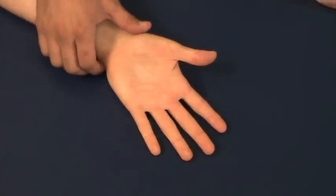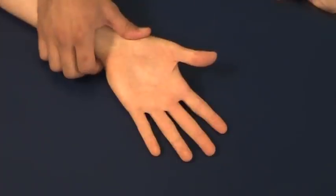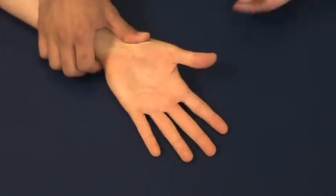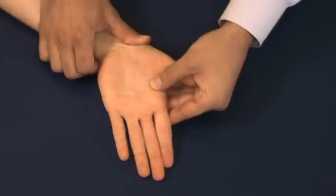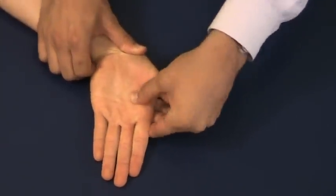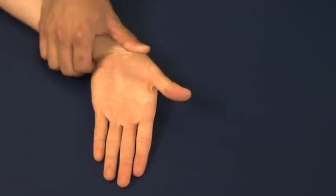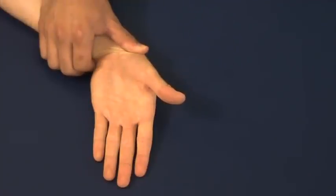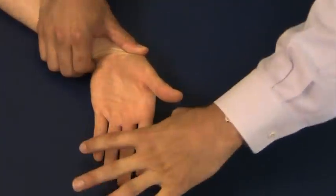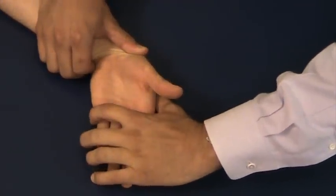The clinician will next apply an ulnar force at the scaphoid tubercle while pre-positioning the patient's hand into ulnar deviation and slight wrist extension. The clinician will now maintain the force on the scaphoid while repositioning the patient's hand into